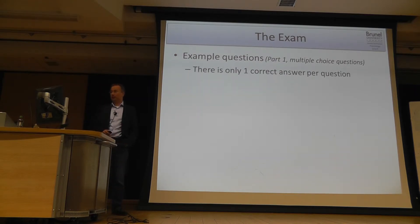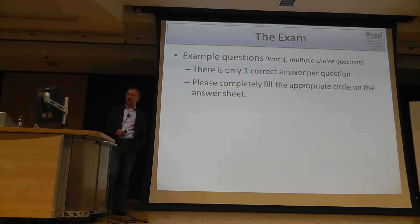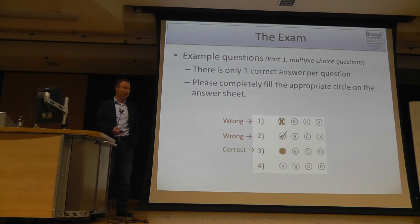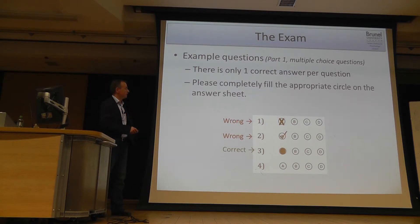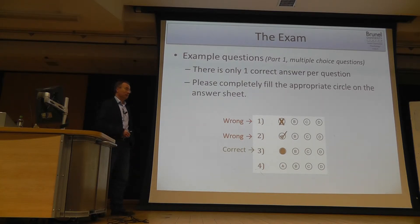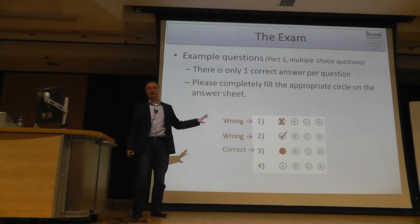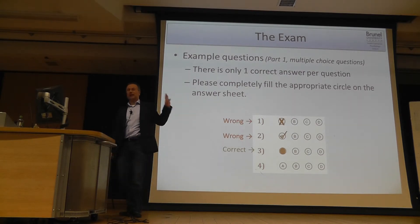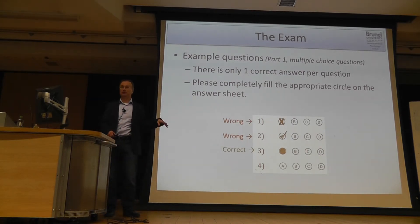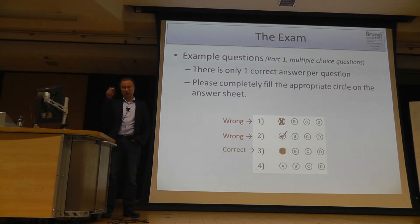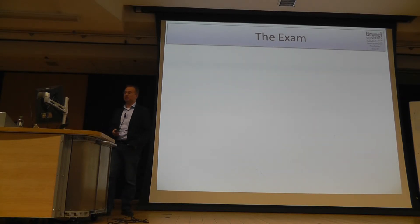There is only one correct answer per question. Make sure that you really fill out that circle — don't just tick it or cross it, but really fill that out. It will be analyzed automatically by computer software, and every unclear marking will be looked at by us as markers. But still, when we are unsure, you may lose the point. If you scribble too much around and we don't know what you actually want to pick, then that's a problem.